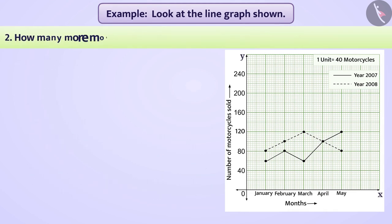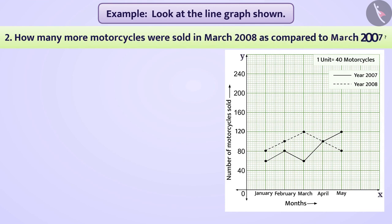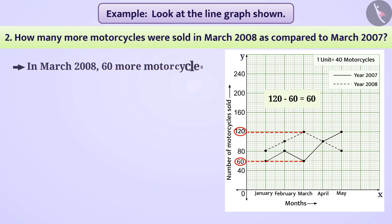How many more motorcycles were sold in March 2008 as compared to March 2007? It is observed from the graph that 120 motorcycles were sold in March 2008 and 60 motorcycles were sold in March 2007. The difference between the two numbers is 120 minus 60 equals 60. So we can say that in March 2008, 60 more motorcycles were sold than in March 2007.